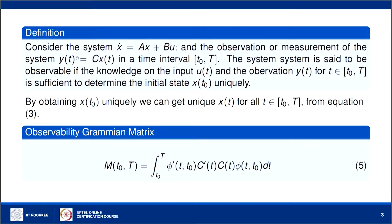The actual definition of observability is given here. If we consider the system ẋ = Ax + Bu, the observability of the system is characterized by the observability Gramian matrix M(t0, T), given by the integral in equation 5, expressed in terms of the state transition matrix and the matrix C.